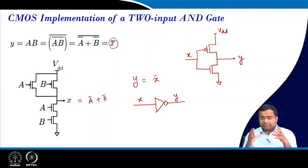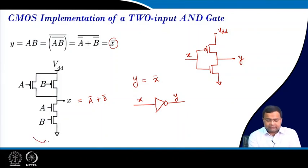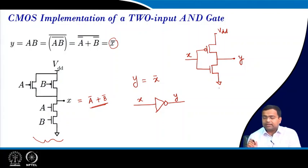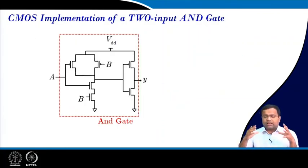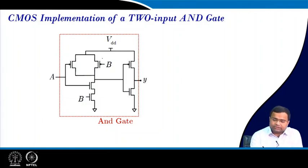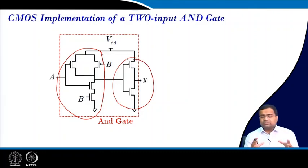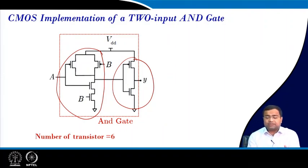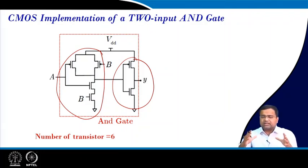So we can implement this AND gate using a NAND gate followed by an inverter. The overall architecture of this AND gate in CMOS technology has the first stage as a NAND gate followed by an inverter, and together this represents the AND function. In this architecture we need 6 transistors — 3 PMOS and 3 NMOS. For ASIC implementation, this is the minimum number of transistors required, and it is both hardware-optimized and power-optimized.